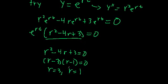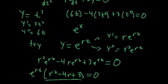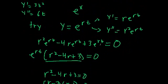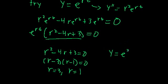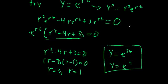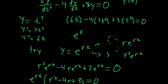So we've found two values of r for our test function that help satisfy this differential equation: r equals 3 gives y equals e to the 3t, and r equals 1 gives y equals e to the t. These should be two solutions.